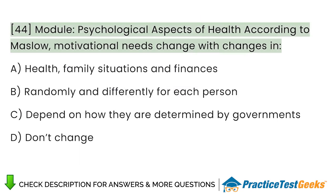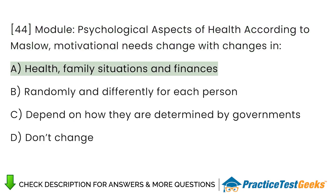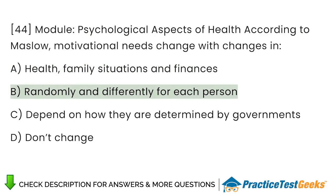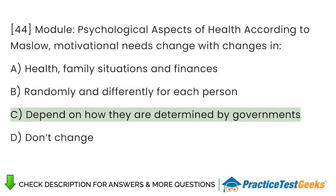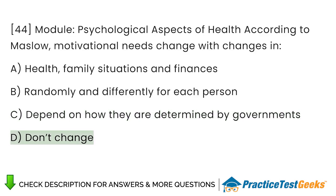Module: Psychological Aspects of Health. According to Maslow, motivational needs change with changes in: A. Health, family situations, and finances. B. Randomly and differently for each person. C. Depend on how they are determined by governments. D. Don't change.